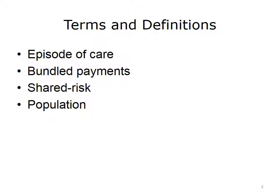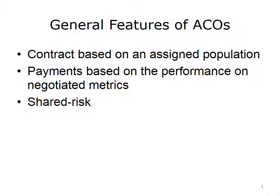This process of assigning individuals is one of the key elements in alternative payment models. In general, accountable care organizations, or ACOs, have these broad features. First, a contract exists between the payer and the ACO. The ACO employs or contracts with providers, and the ACO is accountable for the population of patients who are attributed or assigned to the ACO by the payer. Second, payments are based on performance on negotiated metrics, usually based on total cost of care for the population as well as quality measures. Finally, ACOs usually participate under some level of shared risk, meaning they can lose money if their performance and costs are not aligned.